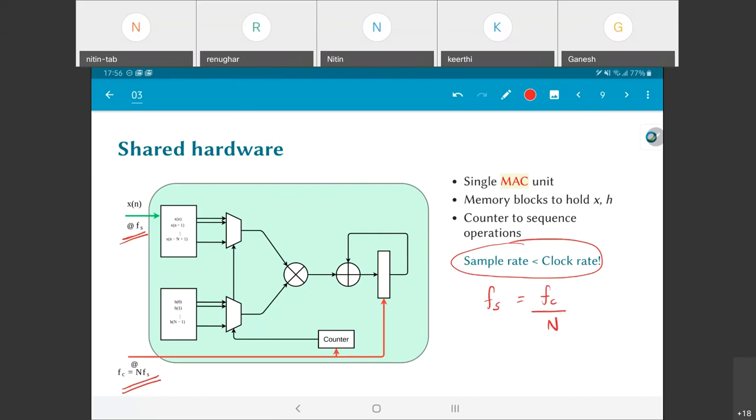It could be lower than this also. So it is not that fs has to be exactly equal to fc by n. It cannot be higher than fc by n given the architecture that I have shown over here. If it is lower, what it will mean is there will be some cycles on which no multiplication is being done or something like that. The point of all of this was to show that it is relatively easy to construct an architecture where the sample rate can be actually smaller than the clock rate. In other words, the clock rate and sample rate need not exactly be the same.